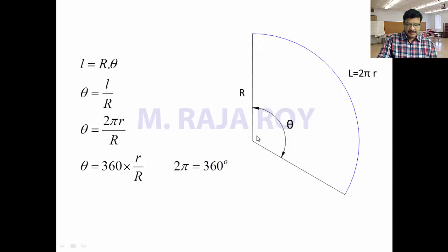The radius of the directing circle is capital R. Our aim is to find theta. Rearranging L = Rθ, we get θ = L/R. Since L = 2πr, substituting gives θ = 2πr/R. Since 2π corresponds to 360 degrees, θ = 360° × (r/R).